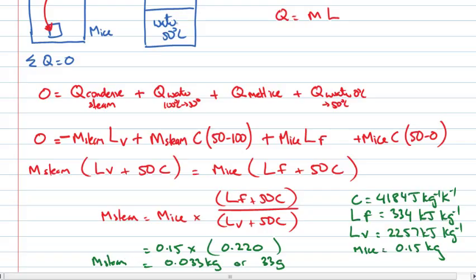So 33 grams of steam is required to end up with just water at 50 degrees Celsius. As a sanity check: if the latent heat of vaporization and latent heat of fusion were the same, the ratio would become 1, meaning equal masses of steam and ice — which makes sense, since the energy for phase changes would be equal, and the temperature changes are both 50 degrees.